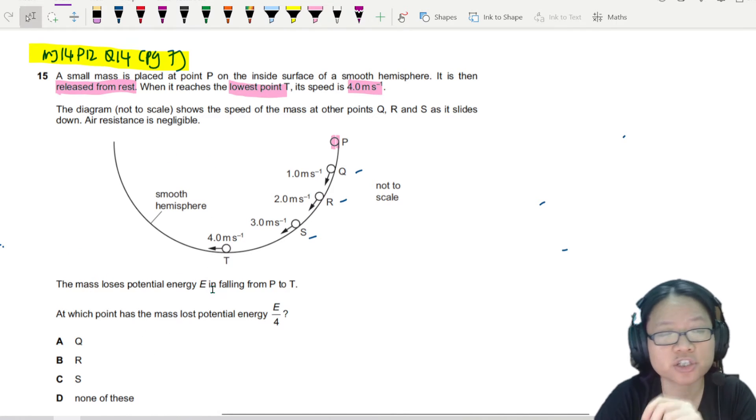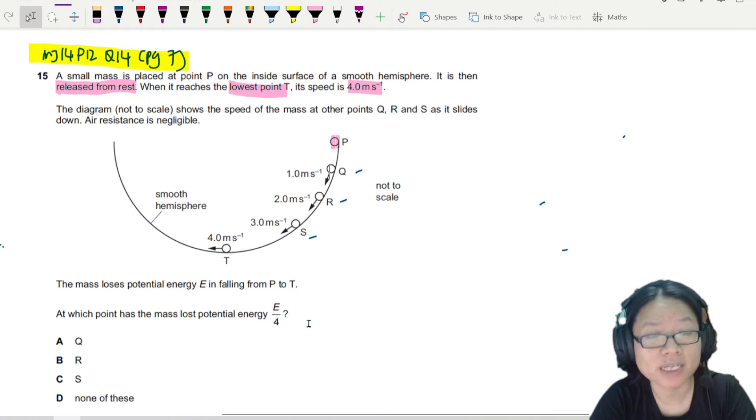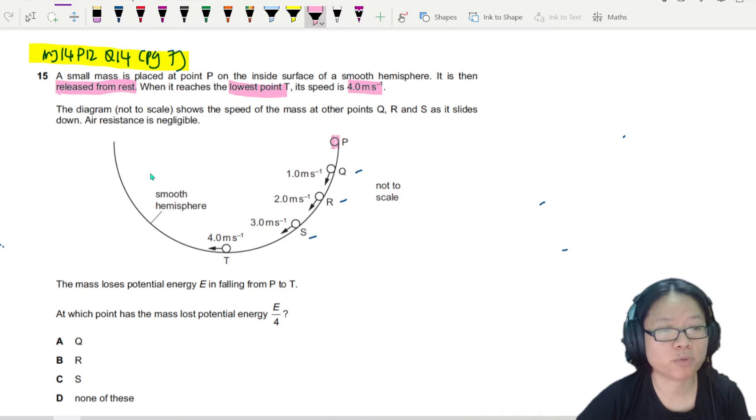The mass loses potential energy in falling from P to T. At which point has the mass lost potential energy E over 4? Alright. So let's try to slot in all this important information first. Let me zoom in a bit.